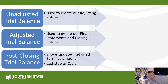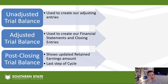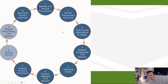We have three different trial balances that we do at various points in the accounting cycle. The unadjusted trial balance is the very first one we do — we use that as a jumping-off point for our adjusting entries and to ensure the accounting system is in balance. The adjusted trial balance is used to create our financial statements and the closing entries, and we prepare it after making our adjusting entries. Finally, the post-closing trial balance shows the updated retained earnings amount and does not include revenue or expense accounts — those have been closed. It is really the final step of the accounting cycle, and then we ramp up to do it all over again the following period.